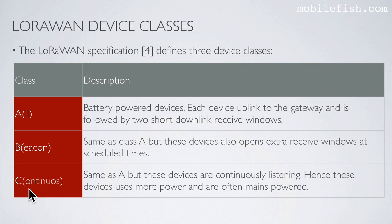Class A devices are battery-powered. Each device uplinks to the gateway and is followed by two short downlink receive windows. Class B is the same as Class A, but these devices also open extra receive windows at scheduled times. Class C devices are the same as Class A, but these devices are continuously listening.